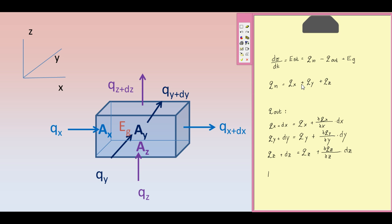We consider the rate of heat generation within the volume. This will be the product of the rate of thermal energy generation times the differential volume, expressed as dx times dy times dz.